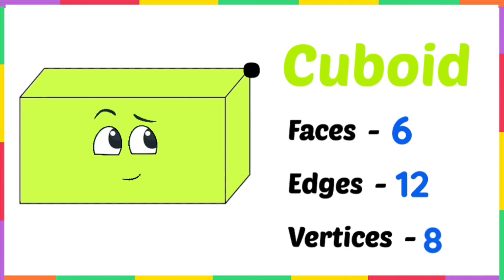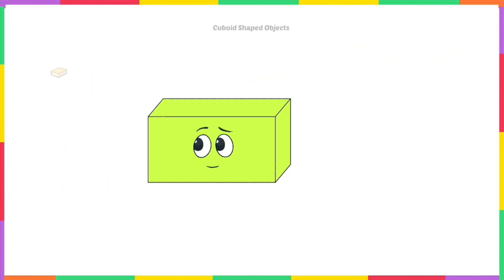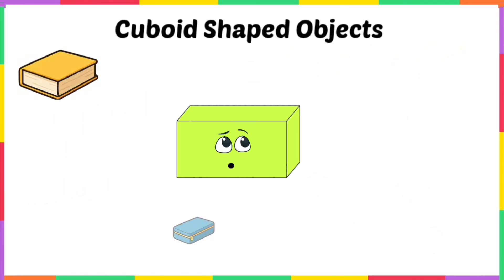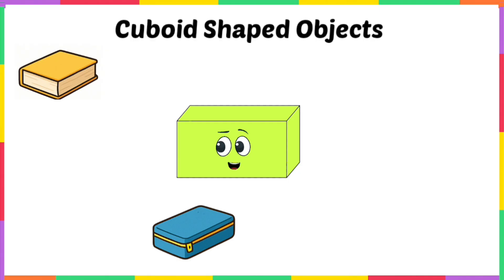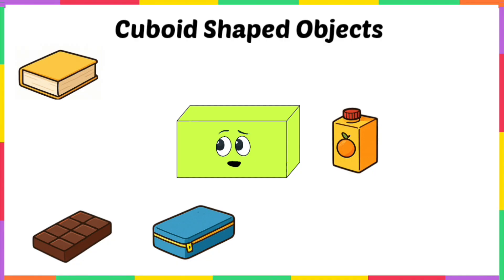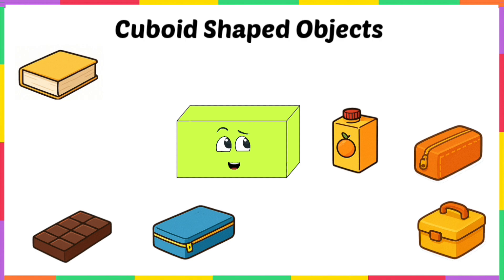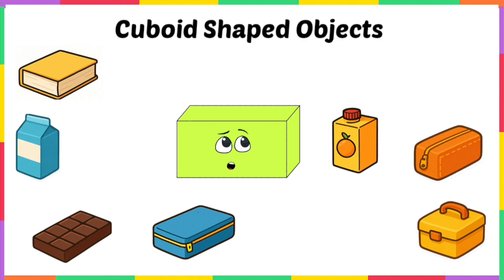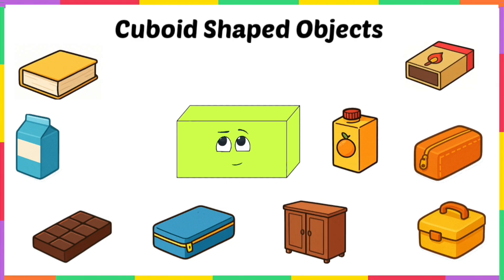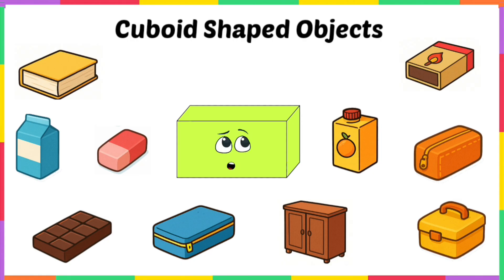You can find me all around you! You can read me as a book, carry your lunch in me as a lunch box, drink from me as a juice carton, enjoy me as a chocolate bar, store your tools in me as a pencil box, keep your valuables in me as a jewelry box, pour milk from me as a milk carton, strike me as a matchbox, open me as a cupboard, and erase with me as an eraser. All these objects are in the shape of a cuboid!